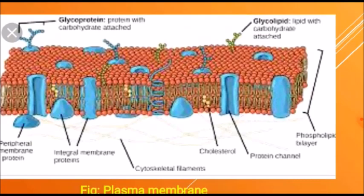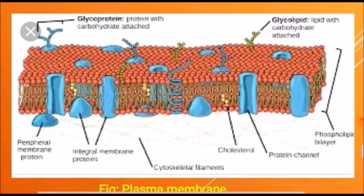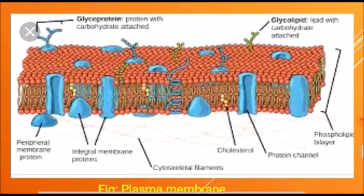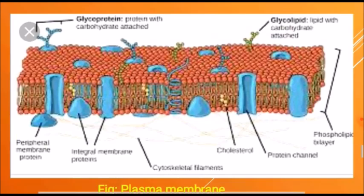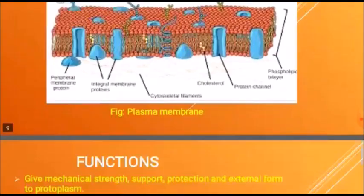Let's have a close look at the diagrammatic representation of the plasma membrane. On the right side below is shown the phospholipid bilayer, and at the top are shown glycoproteins and glycolipids. Among them there are also channels. The two top red layers show the lipid bilayer, and among them the proteins are also shown.